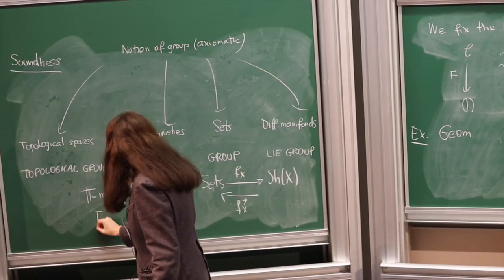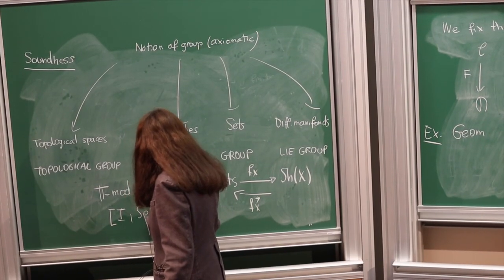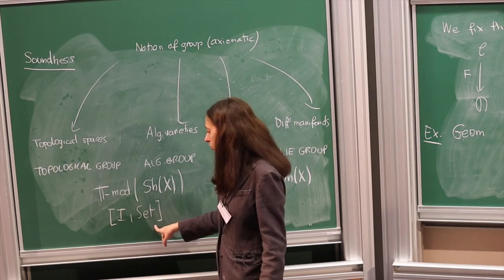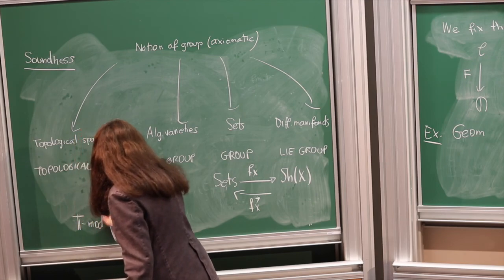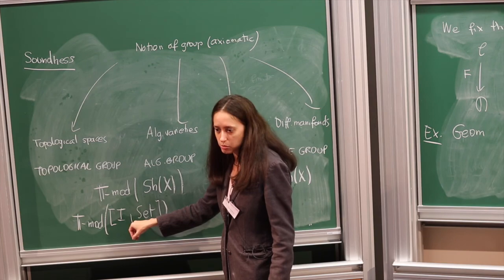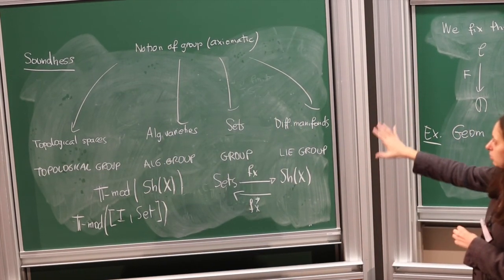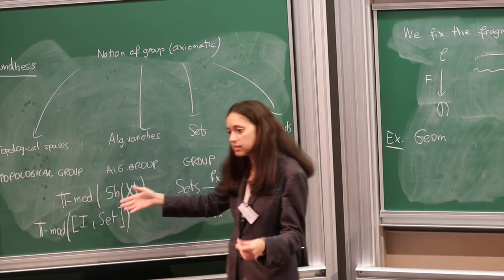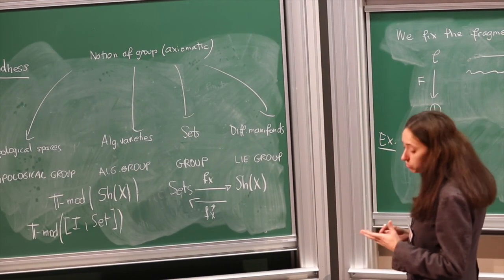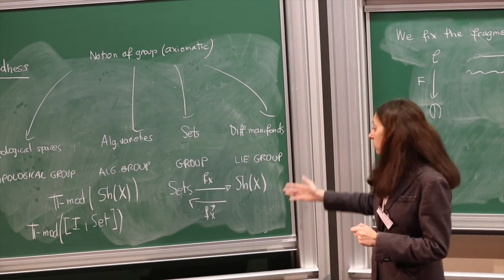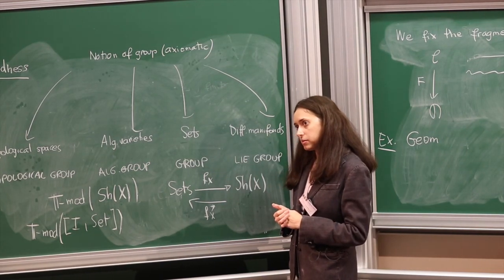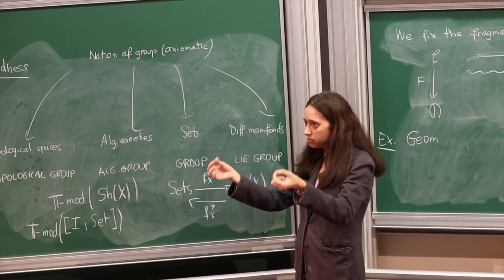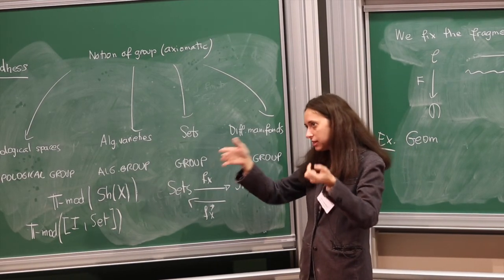For a general geometric theory, the right notion of sheaf of models is a sheaf whose stalks are models, because each stalk gives a point of the topos, and points are just geometric morphisms from the topos of sets to the given topos. The inverse images of these points are jointly conservative, so to have a model in the topos means to have a bunch of compatible models at all the stalks. Similarly, a family of models indexed by a set is captured by taking that set as a discrete category and the corresponding topos.